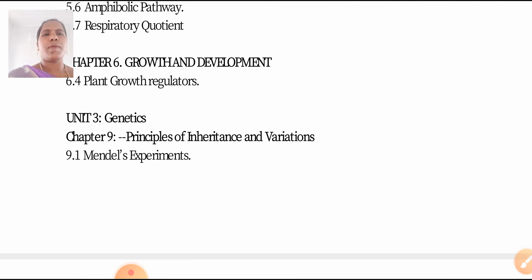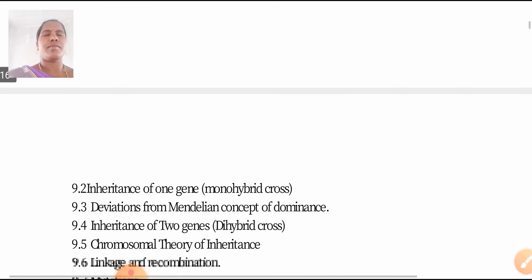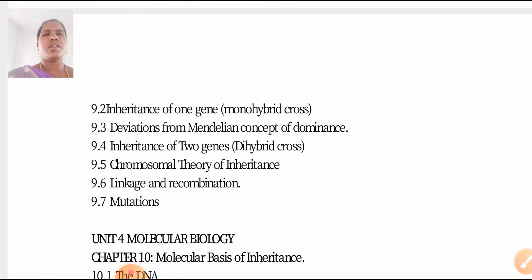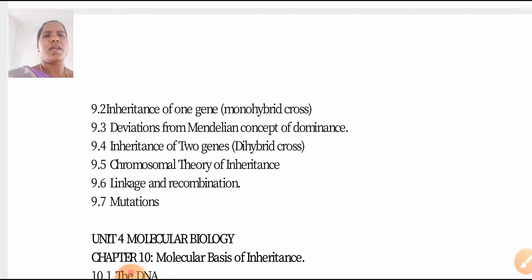Chapter 6 is Growth and Development Plans — plant growth and regulators. Unit 3 is Genetics, Chapter 9: Principles of Inheritance and Variations, including Mendel's experiments, inheritance of one gene, monohybrid cross, deviations from Mendelian concept of dominance, inheritance of two genes, dihybrid cross, chromosomal theory of inheritance, linkage and recombination, and mutations.